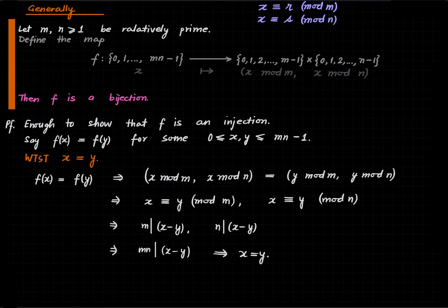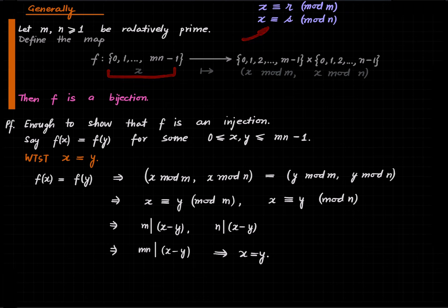We also need to show that the set of all solutions is unique modulo mn. But that is clear by the injectivity of this function: injectivity shows that any two solutions are congruent modulo mn. So this is just an alternate way to state the Chinese remainder theorem, and the proof is much simpler when done this way.